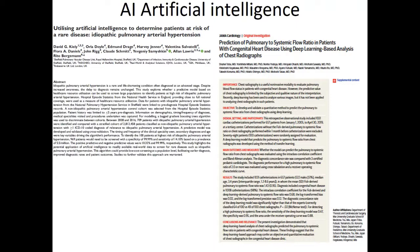It is now impossible not to discuss artificial intelligence and its potential use in pulmonary hypertension. A paper by Kiely shows that AI can identify idiopathic PH patients at risk of poor outcomes. A paper from Japan demonstrates that AI evaluation of chest radiographs can predict the pulmonary-to-systemic flow ratio (Qp/Qs) in congenital heart disease patients, which could inform surgical decisions. These applications are probably not ready for prime time but represent something that can be used in the future.